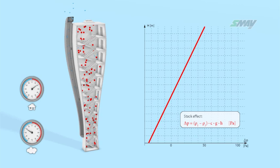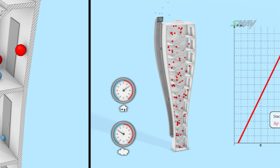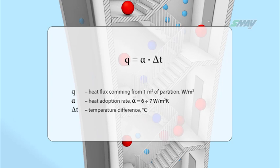The stack effect occurs due to the heating up of air particles by walls and stairs. The amount of heat dissipated by the walls is proportional to the difference in temperature between the air and the partitions.